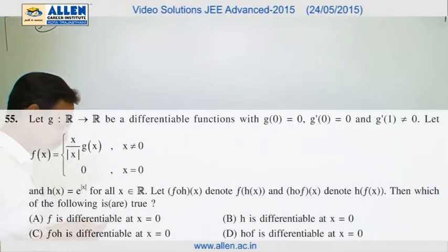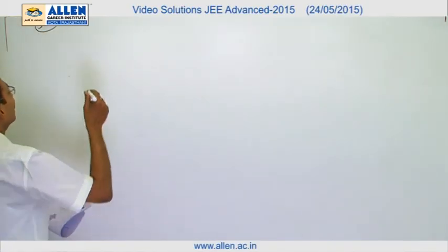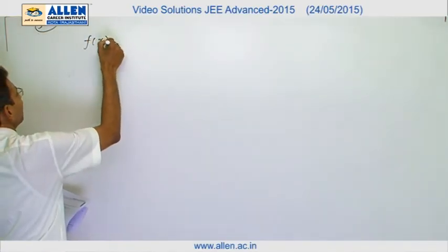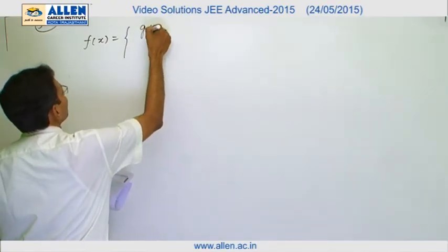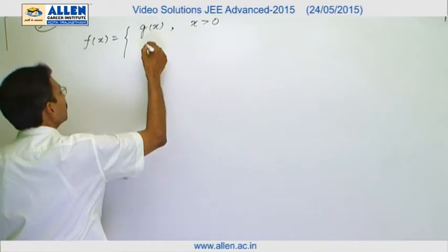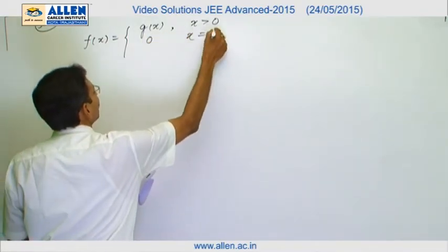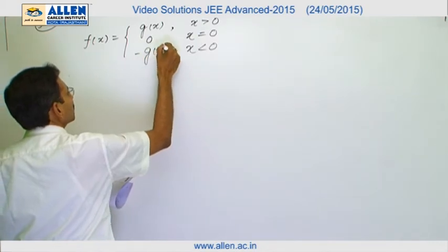Question number 55. We have to verify each and every option as it has more than one correct. Let us write down the fx function. It will be gx when x is greater than 0, it is 0 when x equals 0, and when x is less than 0 it is minus gx.